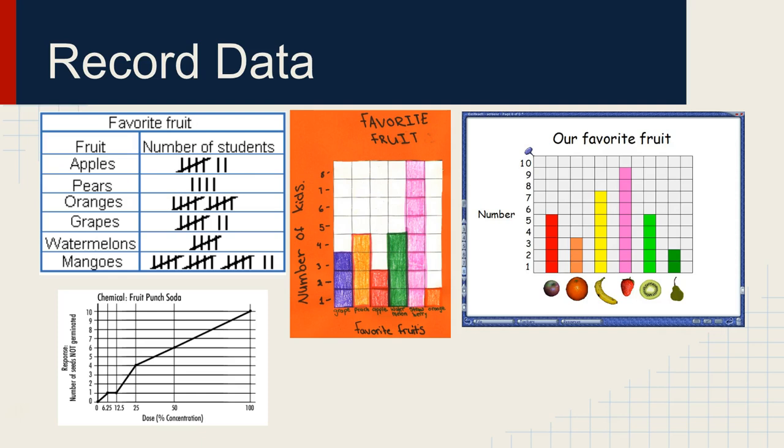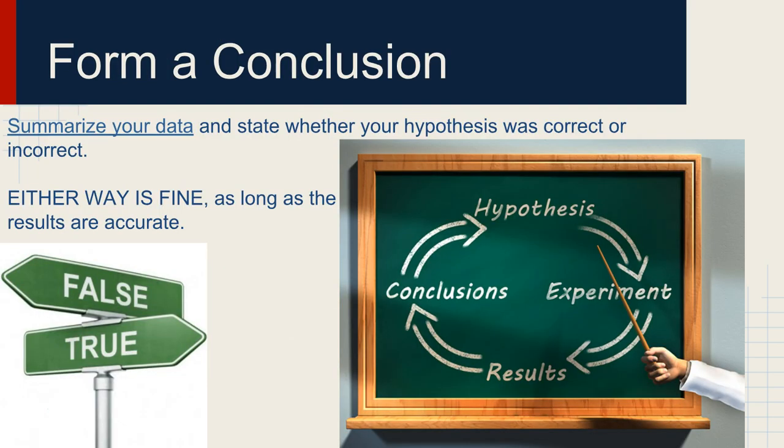After that, we just need to record the data. Usually we start it with some kind of data table, and then we will put that information into a graph of some kind, and we will show you how to do that as well. And at the end, we need to summarize our data, and then state whether our hypothesis was correct or whether it was incorrect.